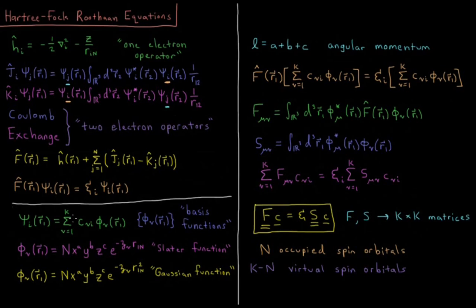So if we take our wave function where atomic orbitals are a linear combination of basis functions, the Fock operator acts on that atomic orbital: f acting on the sum from nu equals 1 to k of c_{nu,i} times phi_nu equals the orbital energy epsilon_i times the sum from nu equals 1 to k of c_{nu,i} times phi_nu. We can define the integrals F_{mu,nu} as the integral over all space of electron one of phi*_mu times the Fock operator acting on phi_nu, in terms of the individual atomic orbital basis functions.